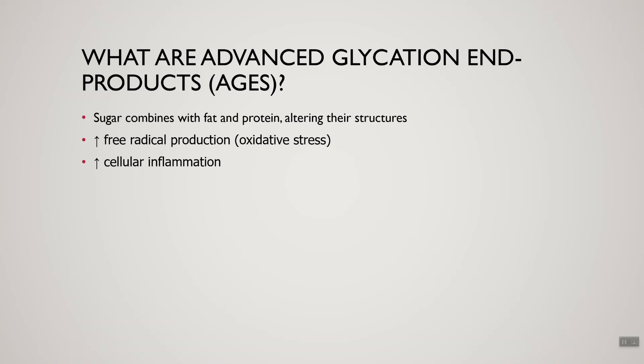Number one: what are advanced glycation end products? These are compounds that are created when sugar combines with either protein or fats, altering their chemical structures. This in turn increases our production of free radicals — what is often called oxidative stress. The increase in free radical production increases cellular inflammation, which is linked to a variety of different health disorders. So the overproduction of AGEs leads to overproduction of free radicals and increased inflammation.